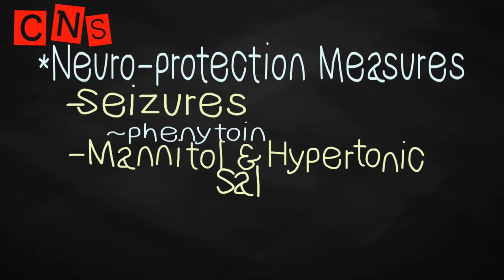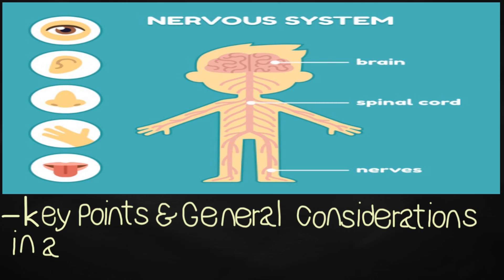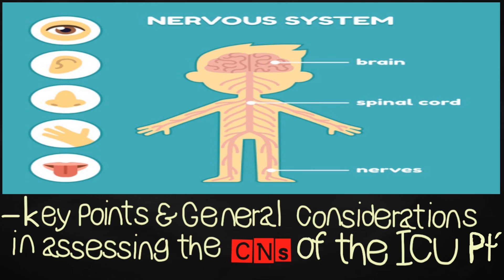The administration of mannitol and hypertonic saline remains controversial but is often reserved for patients with high ICP or suggestive physical signs such as a blown, fixed, dilated pupil. Hyperventilation is a short-term measure to reduce critically high ICP before surgical intervention but should be considered a rescue therapy only. In centers where ICP monitoring is not available, patients with severe head injury are sedated and managed without ICP monitoring for 48–72 hours, after which daily sedation breaks allow assessment of underlying conditions.